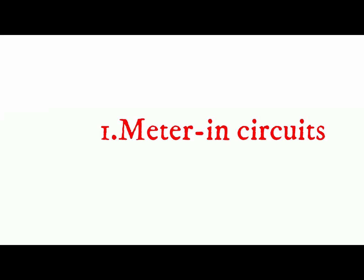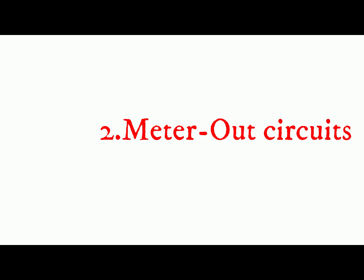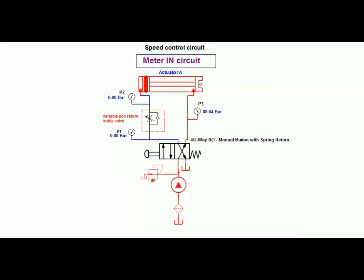1. Meter in circuits, 2. Meter out circuits, and 3. Bleed off or bypass circuit. Air and hydraulic systems use meter in and meter out circuits, while only hydraulic circuits use bleed off types.